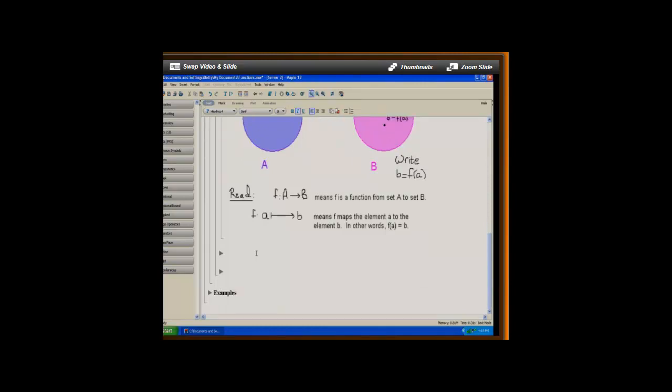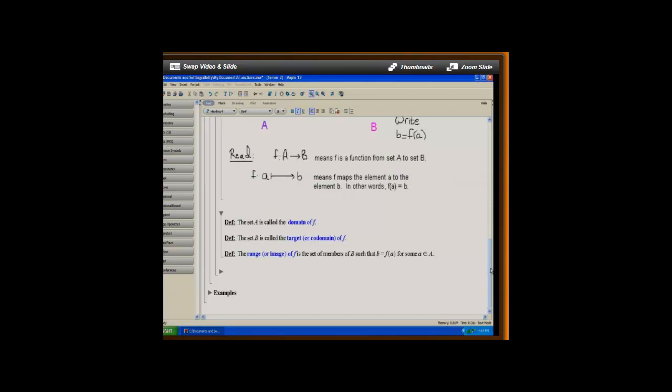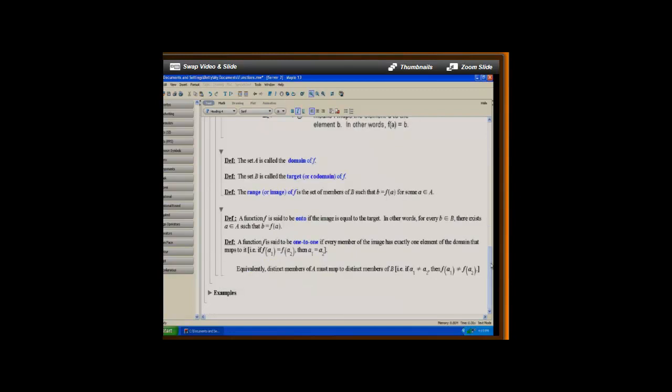Now we have some more terminology. The set A is called the domain of the function, the set that we're mapping from. And then the set B that we're mapping to is called the target or sometimes it's also called the co-domain of the function. Now sometimes we won't hit every member of the target set. We'll only hit a certain range or image of the set, and those are the members of the target B such that there is an element A in the set A that maps to the B. Now in the special case where we have that the target is equal to the range or image, then the function is onto. Again, we say the function is onto if it maps onto every member of the target set B.